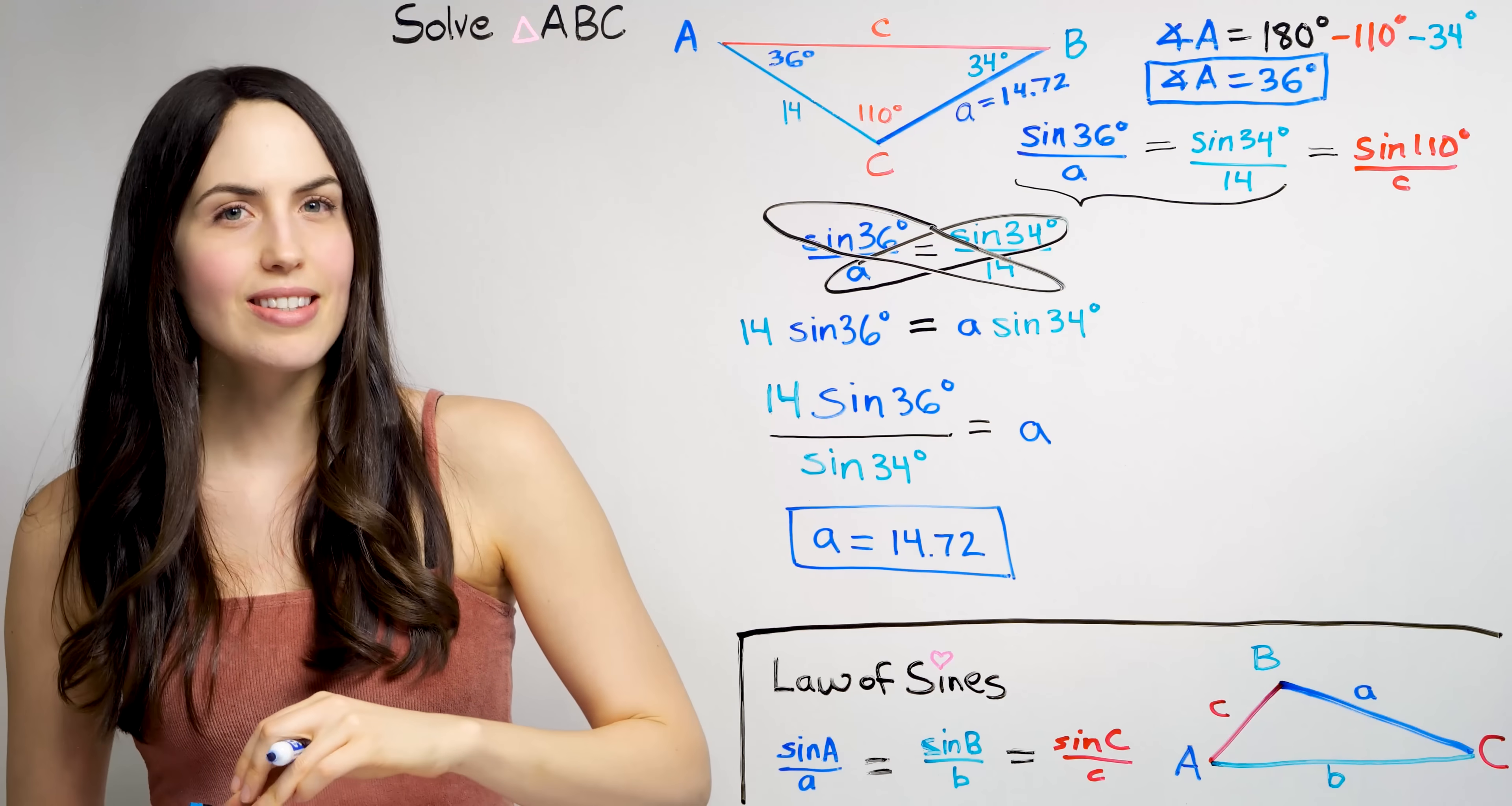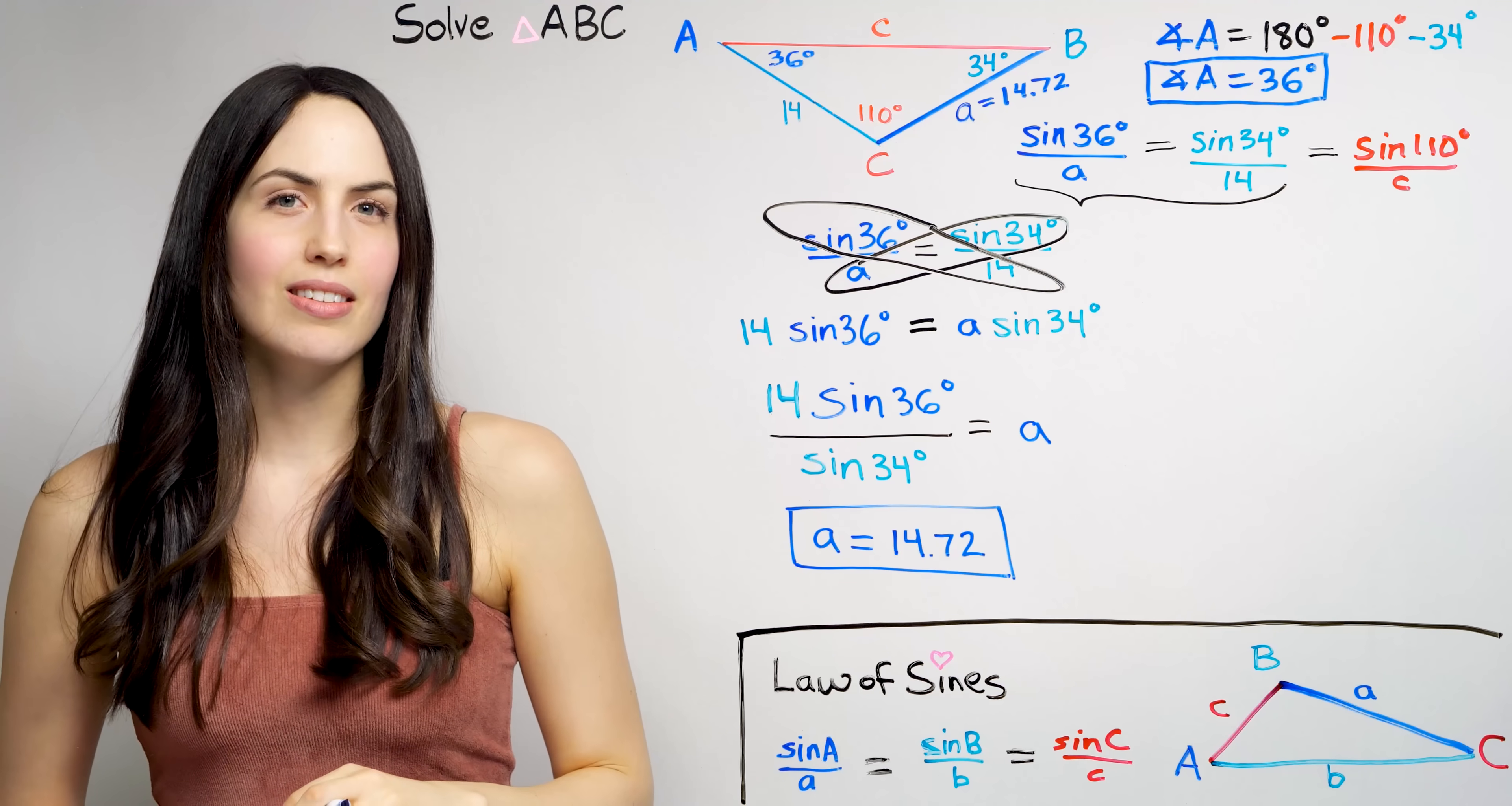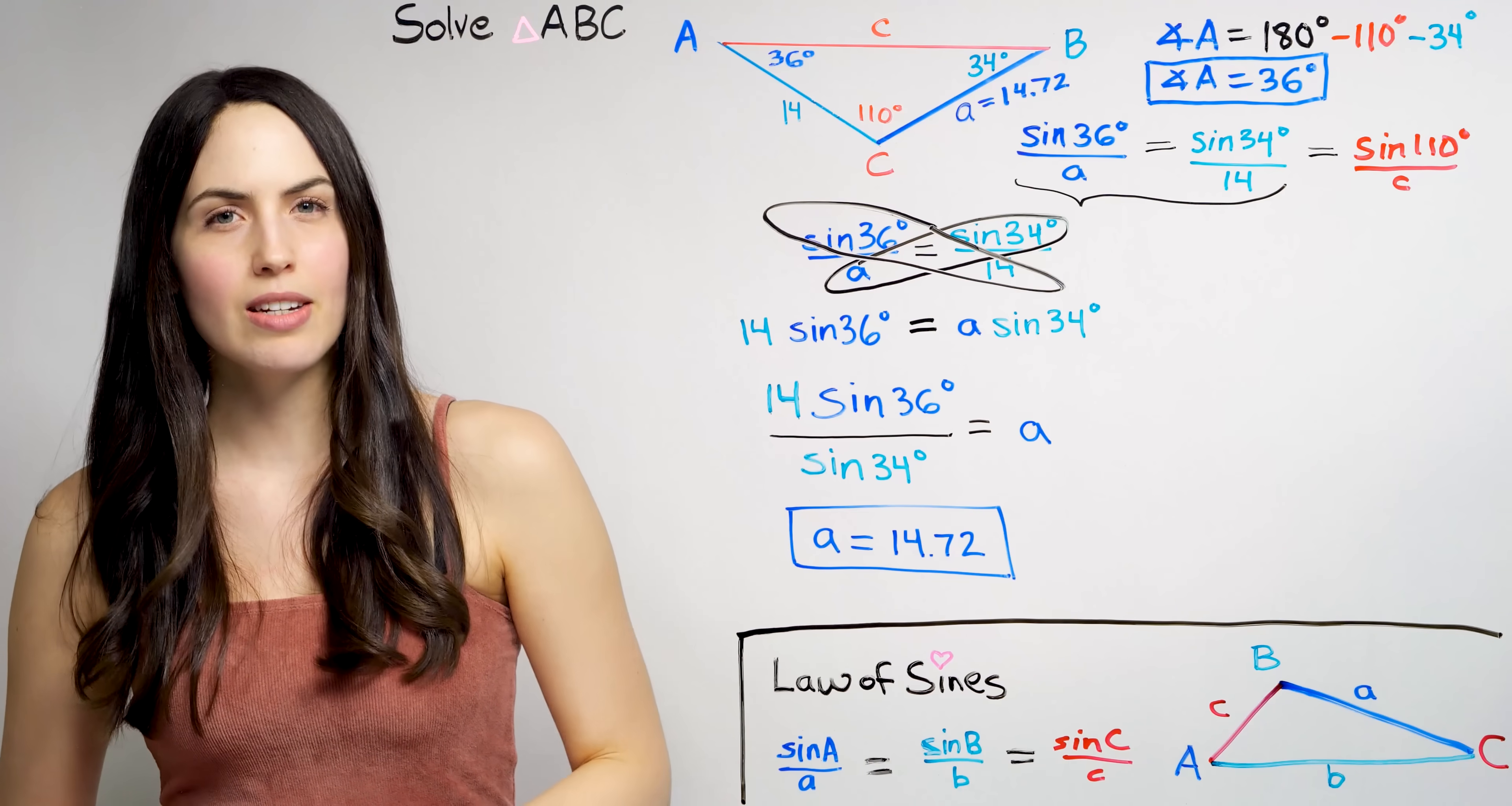By the way, you could instead take the reciprocal of each side here, if cross multiplying isn't your thing. You could flip each side and do it that way. Someone out there knows what I'm talking about and prefers that. But most people find the cross multiplying to be easier.